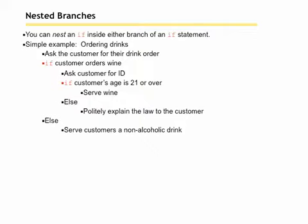Else, serve the customer a non-alcoholic drink. So this else matches up with 'if the customer orders wine' — the outermost else. The other else lines up with 'if customer's age is 21 or over.' The rule with matching elses with ifs is: the else goes with the nearest if, and of course braces can change that order, but the else pairs with the nearest if.